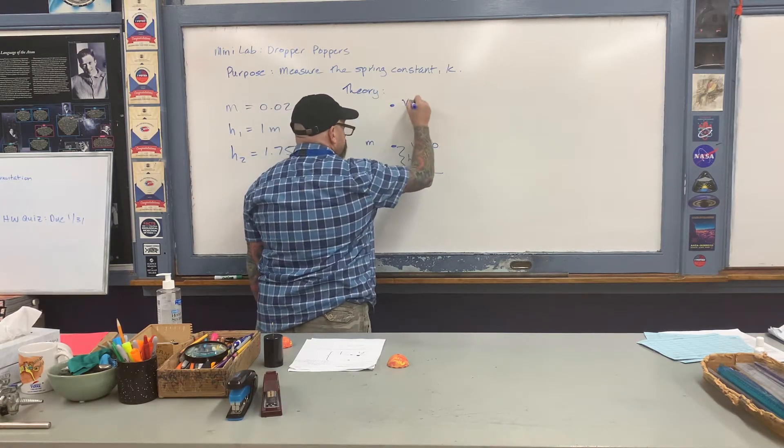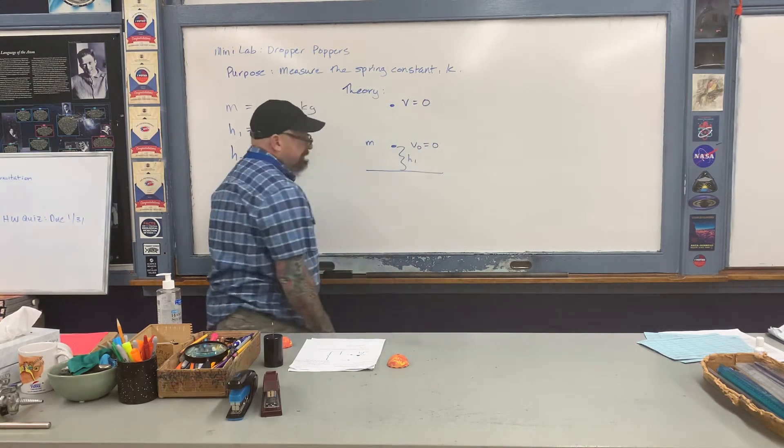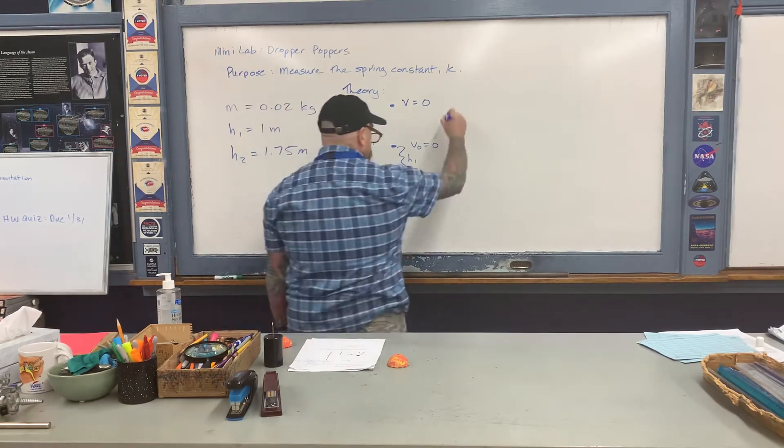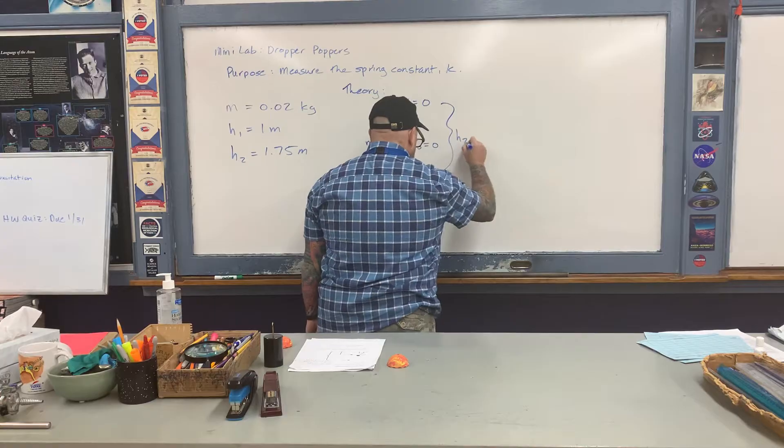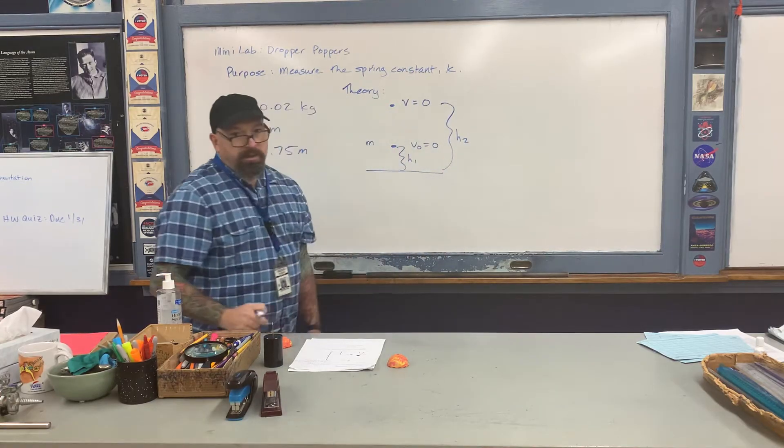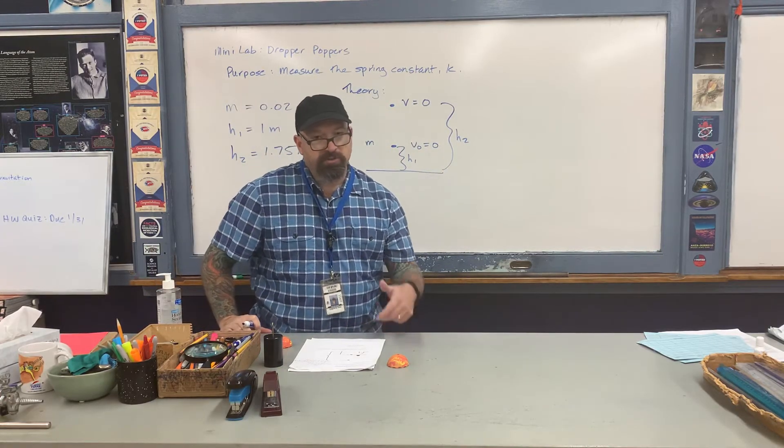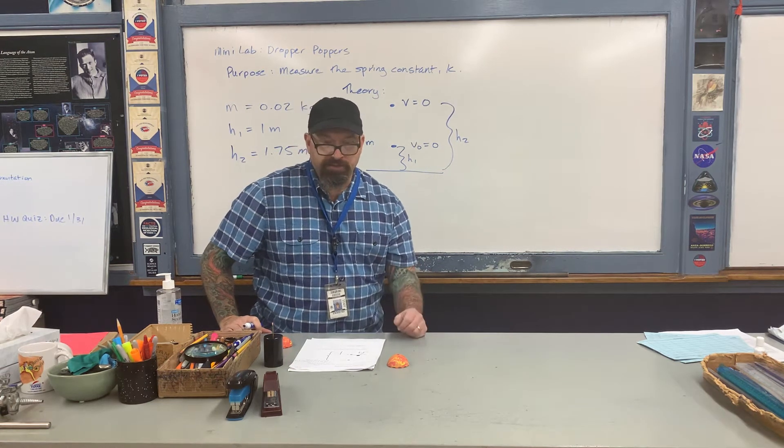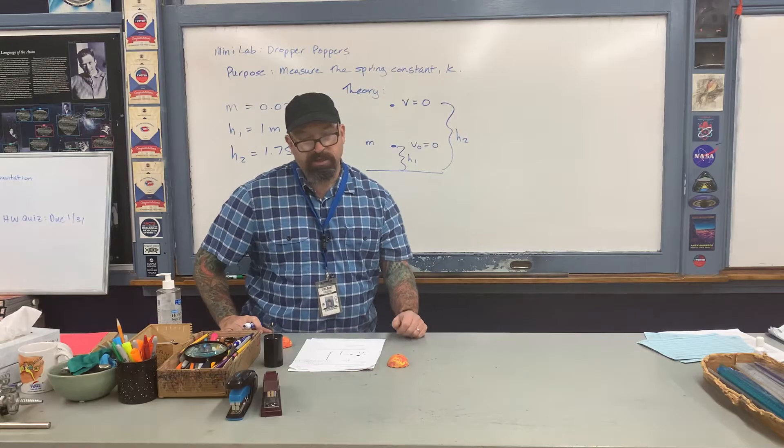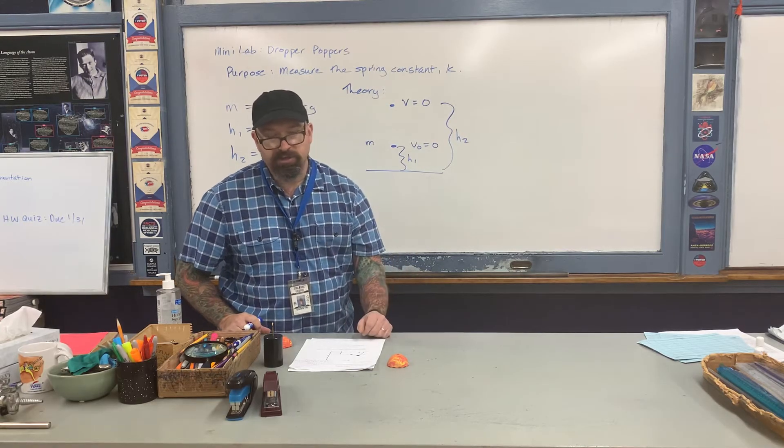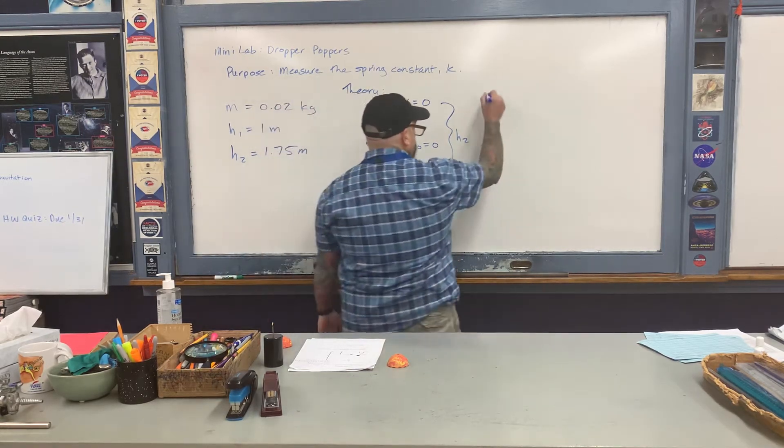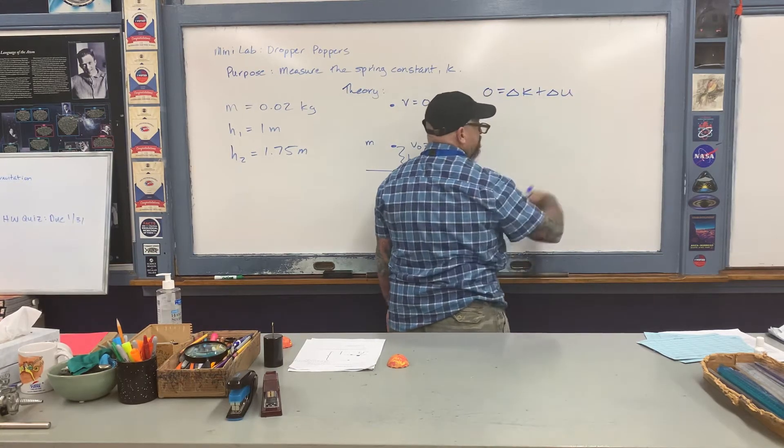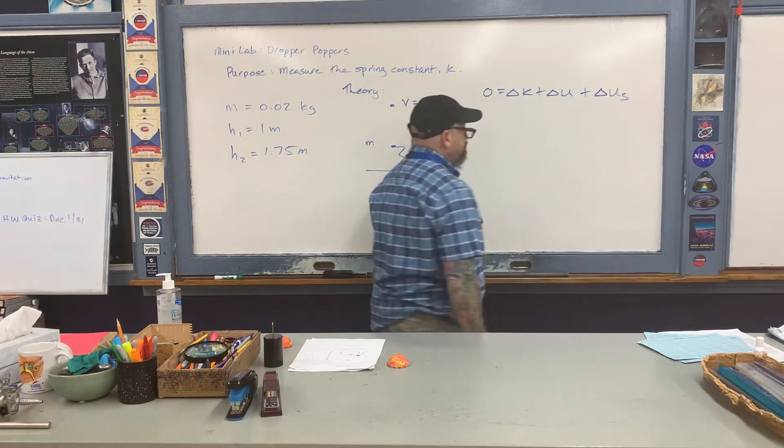It pops and rises to this greater height where I catch it at its maximum height. For an instant, its speed equals zero at that point. Right here is the height h2 that I measure. We're going to ignore friction with the floor and air resistance, so conservation of energy applies to this situation. I begin to write the conservation of energy equation in the following way: zero equals delta K plus delta U for gravity plus delta U for the spring.